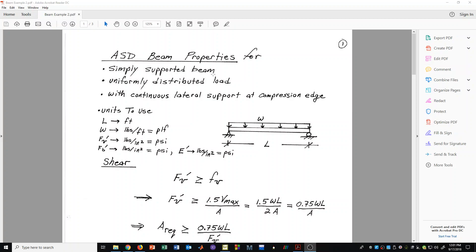In timber design, it is very common for us to have beams that are simply supported and have a uniformly distributed load placed upon them. It is also common for those beams to have continuous lateral support at the compression edge.